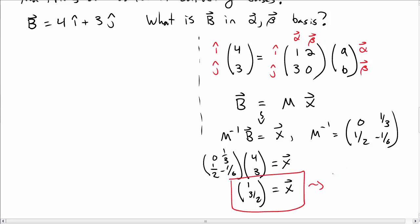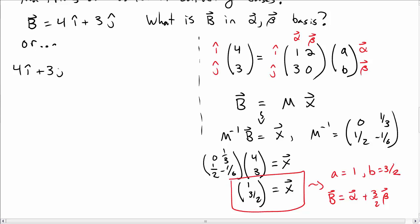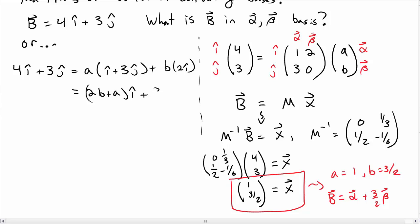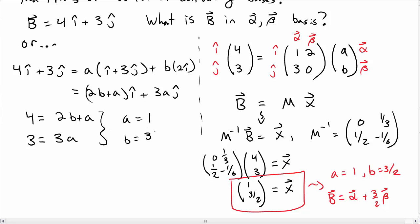This tells me that b written in the new basis is alpha + 3/2 beta. Of course I could also do this algebraically: write 4 i-hat + 3 j-hat equals a times alpha plus b times beta, expand, collect terms in i-hat and j-hat, and match coefficients to get two equations for two unknowns. That gives the same result. But the matrix form is in some sense more fundamental and will be useful more broadly.